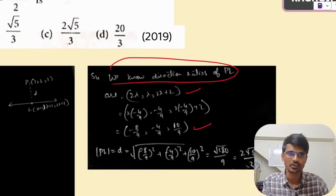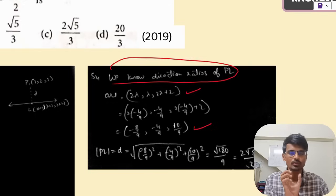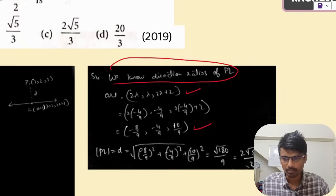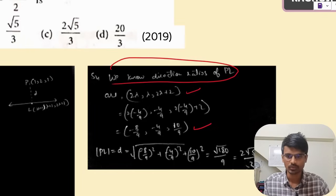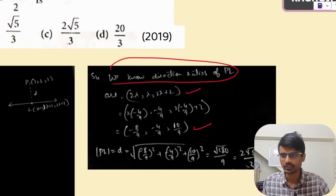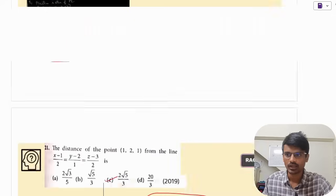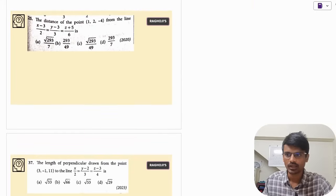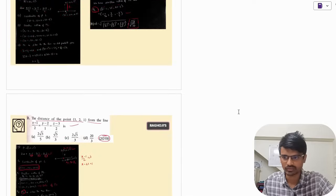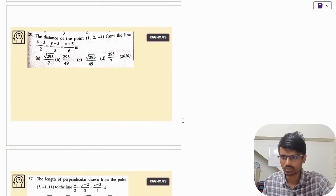When we know the direction ratios, the magnitude is found using √(sum of squares of each component): √[(−8/9)² + (−4/9)² + (10/9)²] = √(180)/9 = 2√5/3. So the correct answer is option C. This is a very important question — if you practice it, you will get it. It's not difficult, but you need to practice and get a hang of it.